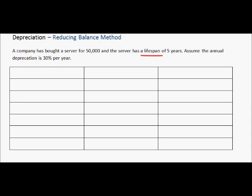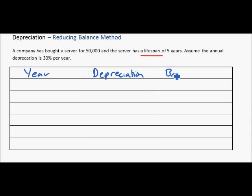The first thing we need to do is fill in the table we have below. We have three columns: year, depreciation, and book value. Book value is the value of the asset as shown on the balance sheet. Depreciation represents how much the asset has been depreciated in that year.